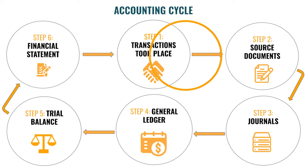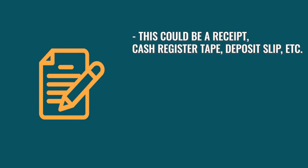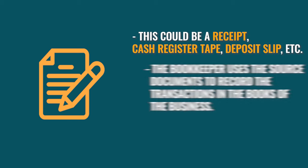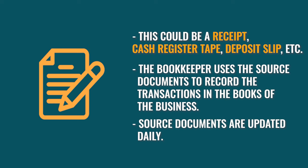The second step of the accounting cycle is to record the transaction on a source document. Every transaction should be recorded on a source document, and this could be a receipt, a cash register tape, or even a deposit slip depending on the transaction. The bookkeeper uses source documents to record the transactions in the books of the business. Source documents are updated daily.